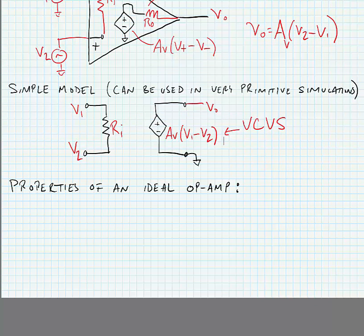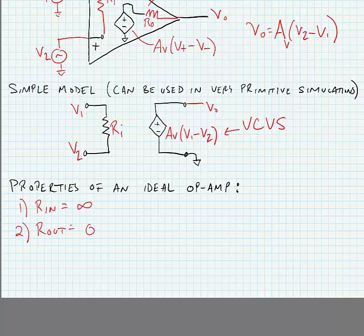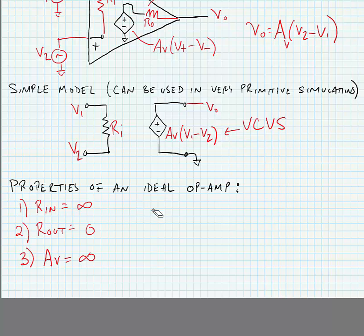The properties of an ideal op-amp include infinite input impedance and output impedance equal to zero. We also want the gain A_V to be infinite. When this condition is met and the input resistance goes towards infinity, hooking the op-amp up in negative feedback creates a virtual short at the input. This gives us a condition where the input terminal voltages are equal to one another, which is necessary in order to have a finite output when the voltage gain is infinite.